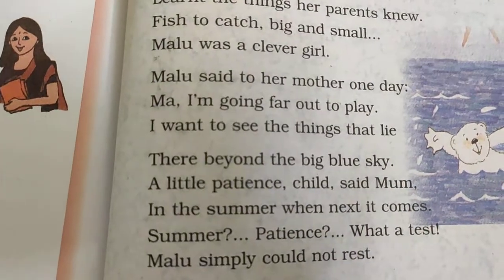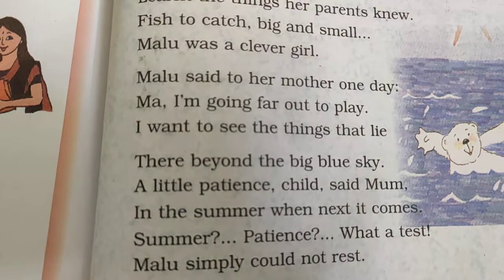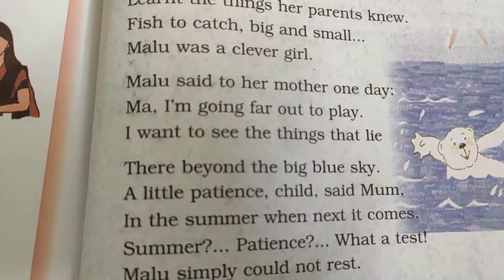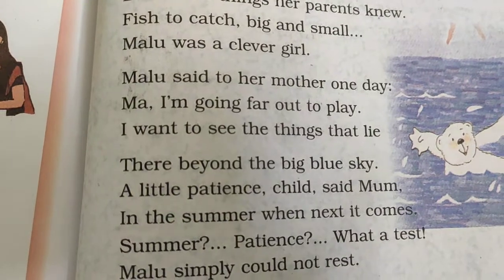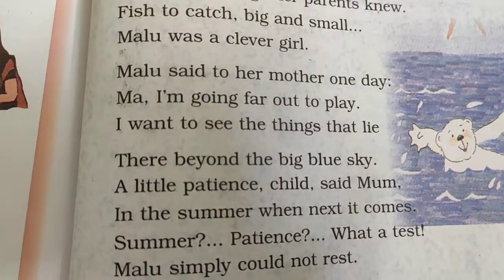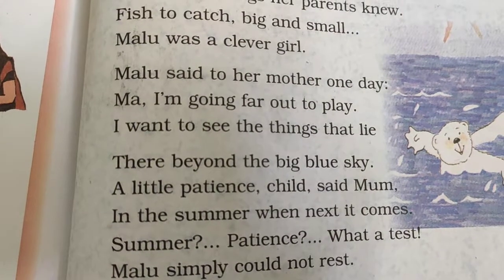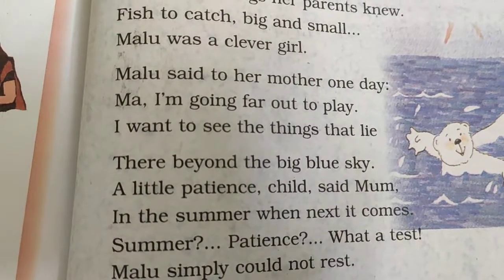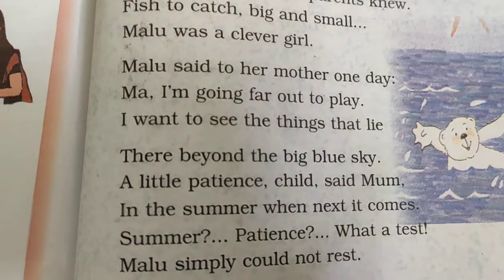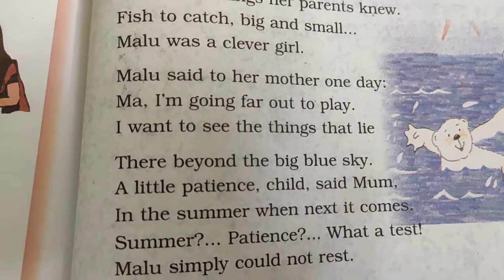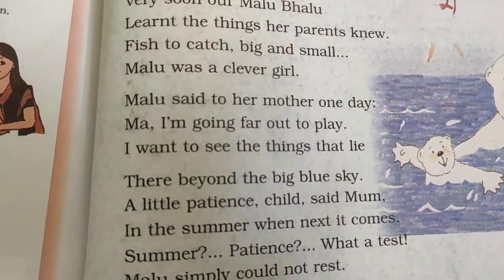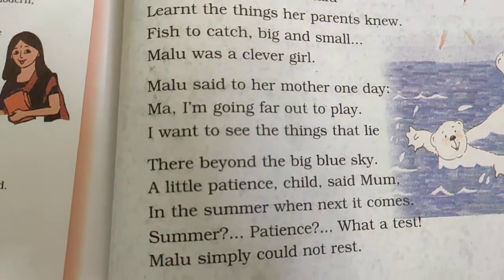Water mother said: a little patience, child, said mom. Toh Malu ki mummy ne bola ki bachcha thoda sa sabar rakho, patience means dhair. In the summer, when next it comes, water test — Malu simply could not rest. Toh Malu ne bola, summer tak kitna sabar rakhoon main, yeh toh ek test jaisa hai, mujhse aisa nahi ho payega. Aur Malu bilkul bhi patience nahi rakh pa rahi thi — usko lag raha tha ki usse dekhna hi hai ki sky ke pichhe kya kya cheezein hain.